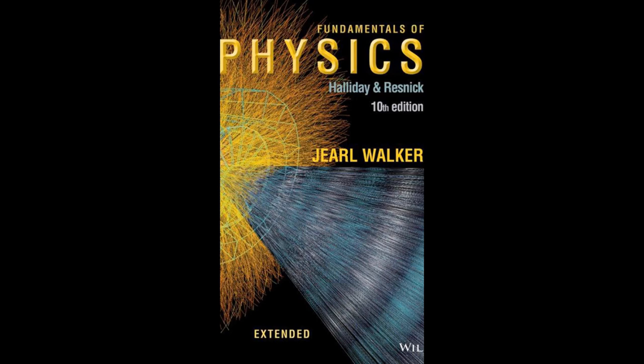Gravitation is the fundamental force of attraction between objects with mass. It is responsible for the natural phenomenon that keeps us grounded on Earth and governs the motion of celestial bodies in the universe. Sir Isaac Newton first formulated the law of universal gravitation in the 17th century. According to Newton's law, every object in the universe attracts every other object with a force that is directly proportional to the product of their masses and inversely proportional to the square of the distance between them. Albert Einstein's theory of general relativity, developed in the early 20th century, revolutionized our understanding of gravitation. Instead of a force acting at a distance, Einstein proposed that massive objects warp the fabric of space-time around them, and this curvature causes other objects to move on curved paths, which we perceive as gravitational attraction.